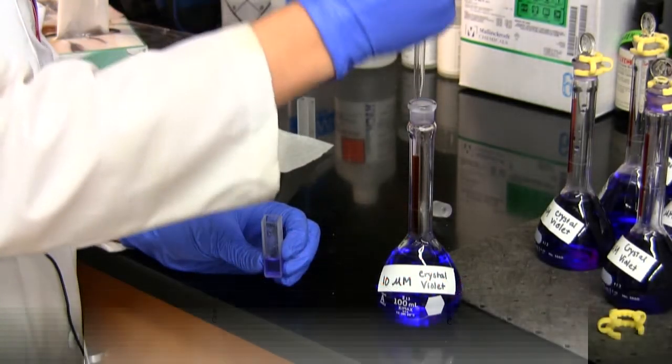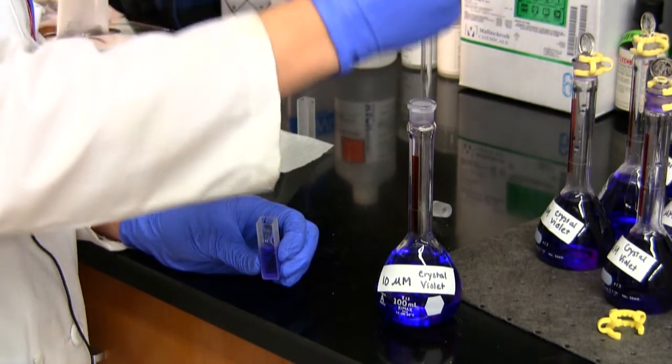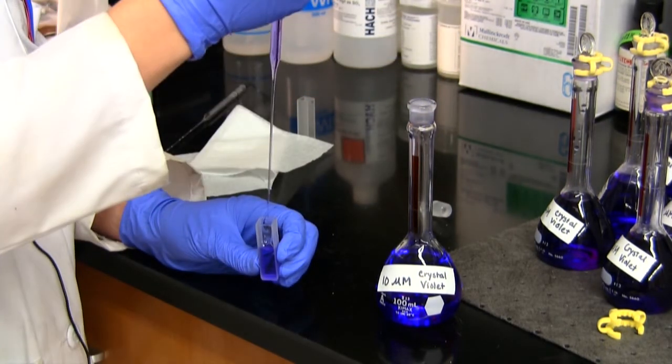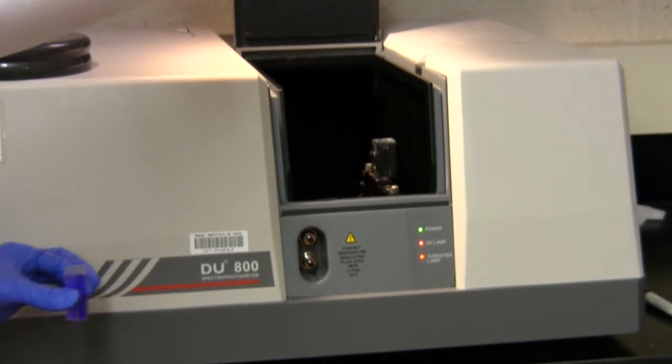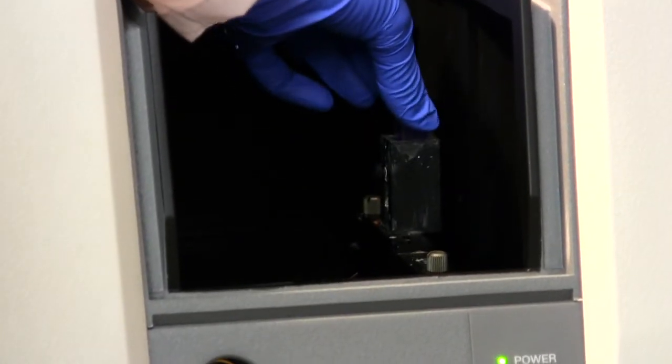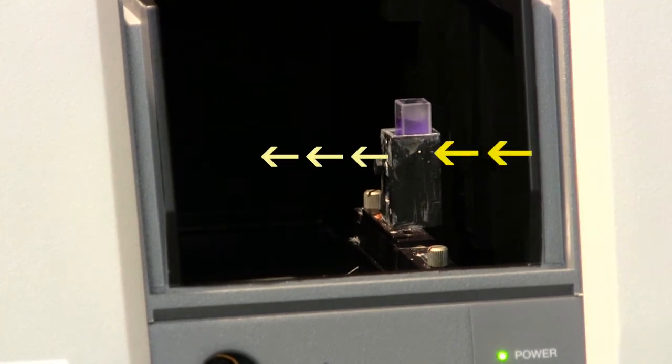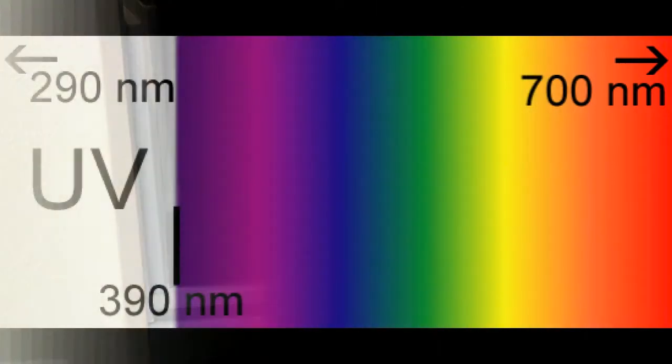First, we have to put some of our solution into a cuvette. We then place the cuvette into the holder inside the spectrophotometer. Now, when we take a measurement of our solution, the spectrophotometer will send a beam of light through our solution at whatever wavelength I set. For this experiment, I have set the wavelength range from 290 nanometers to 700 nanometers.